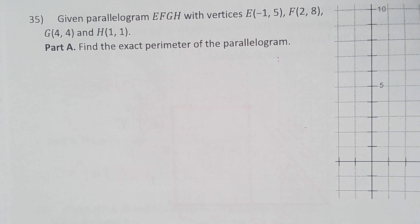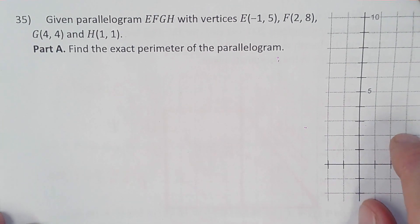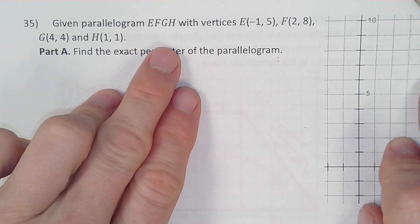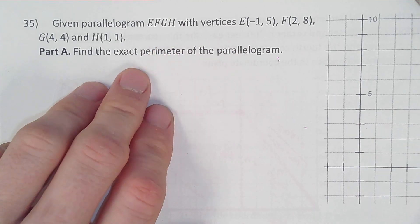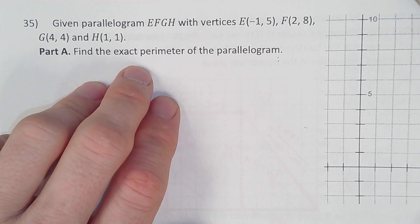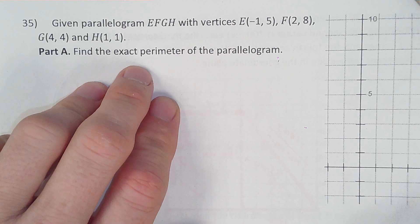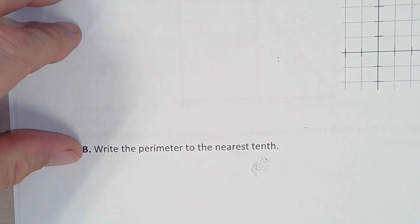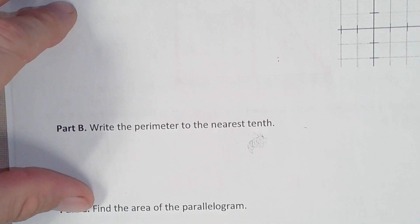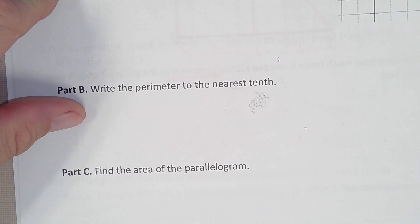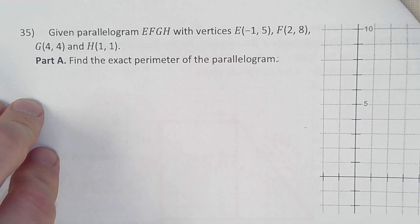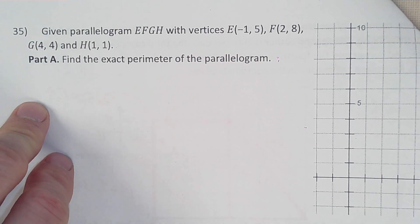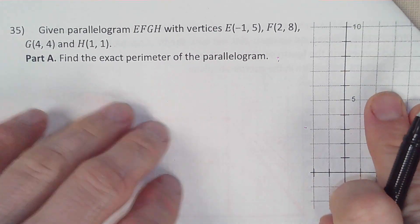This is EOC review number 35. So this is a parallelogram EFGH. We need to find the exact perimeter — there's going to be radicals because the next part asks for the perimeter to the nearest tenth — and then the area of a parallelogram. Let's start by plotting this.